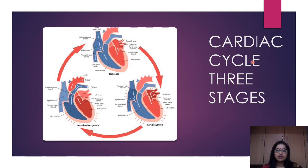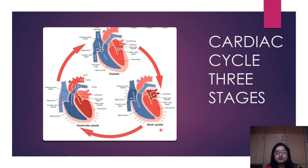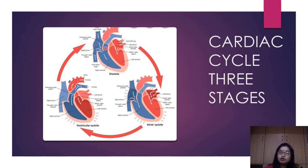The cardiac cycle describes how the heart circulates blood. There are three stages. Diastole refers to the relaxation phase and systole to the contraction phase. During joint diastole — when both atria and ventricles are relaxed — both semilunar valves of the pulmonary artery and the aorta are closed, yet blood continues to flow into the right atrium, left atrium, right ventricle, and left ventricle.